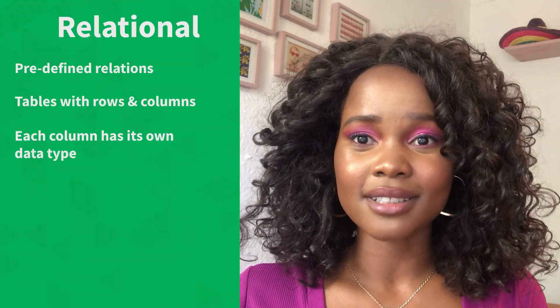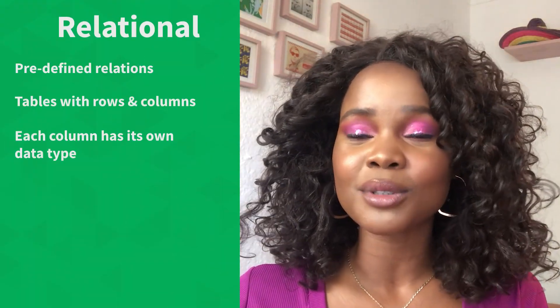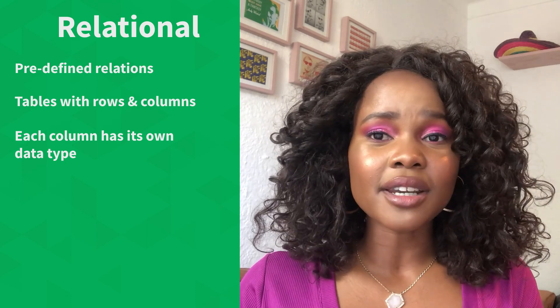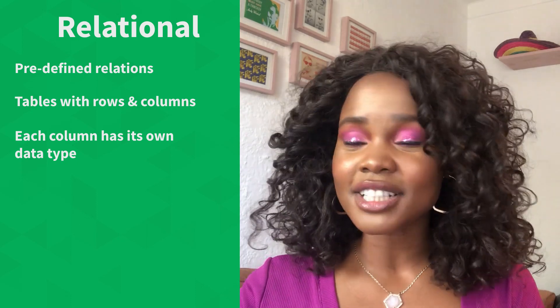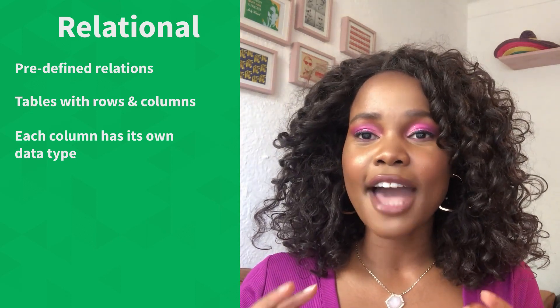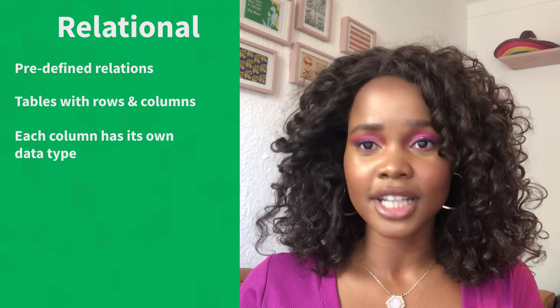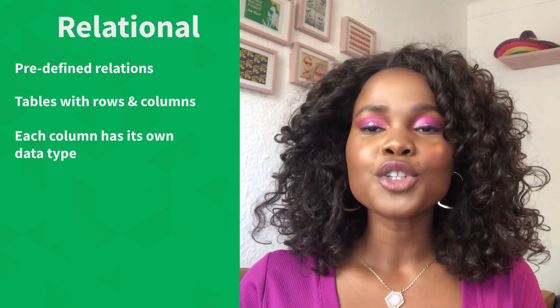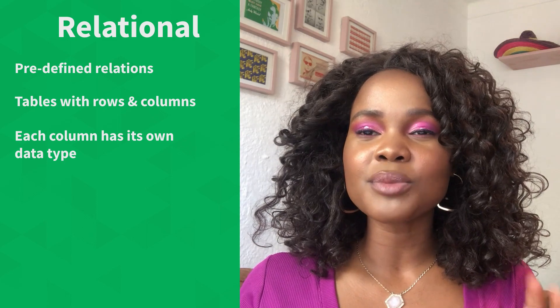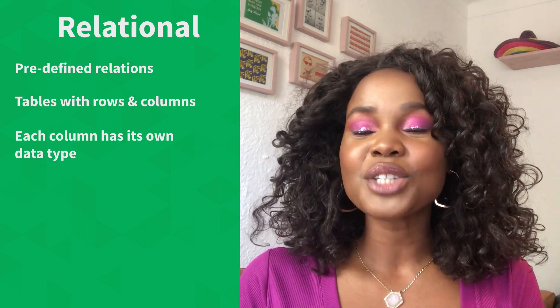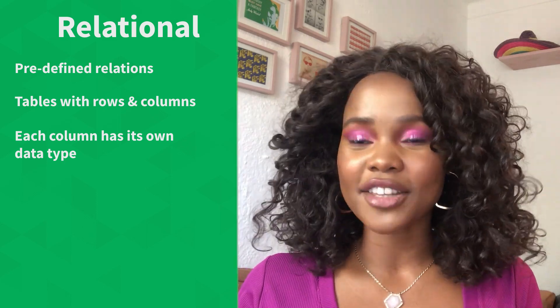We are going to start with relational databases. These are databases that use tables to store information. Relational databases are characterized as being very strict and structured and having predefined relations. We're storing information in multiple tables, so we need to know the relations between all these tables, and all the tables need to have a link to at least one other table.